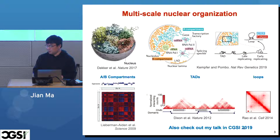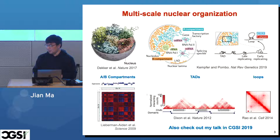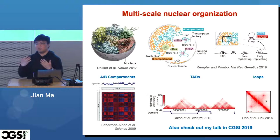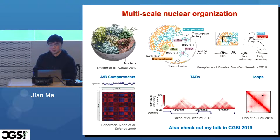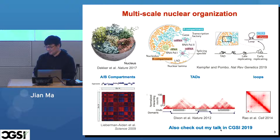Three years ago in 2019 at CGSI, I gave a talk covering all kinds of computational methods for identifying these multi-scale structures — from A-B compartments to TADs and loops — because as you can tell from these contact maps, different people looking at them may draw different conclusions. Also depending on how much coffee you had in the morning, you might see different things. You need more quantitative methods to identify them. If you're interested, check out my CGSI 2019 talk.